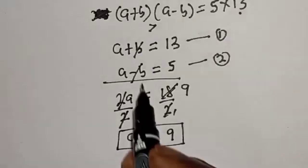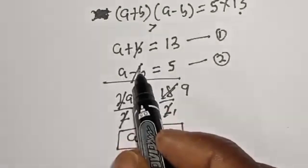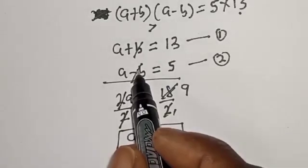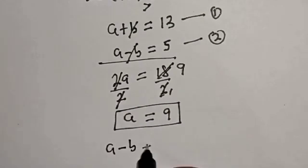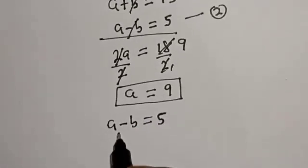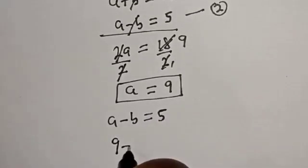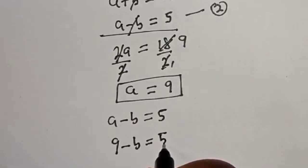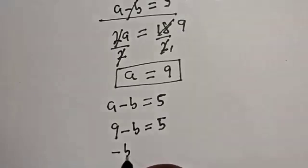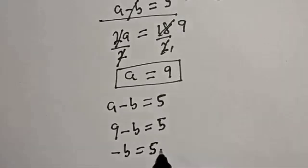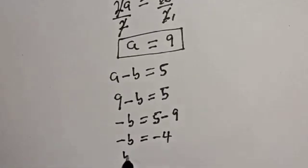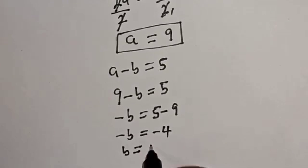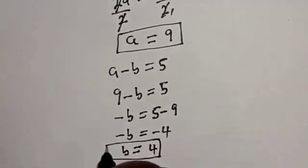Now we can solve for B using equation 2. Equation 2 is A minus B equals 5, where A is 9. So 9 minus B is equal to 5, which gives minus B equals 5 minus 9, so minus B equals minus 4. Therefore, B is equal to 4.